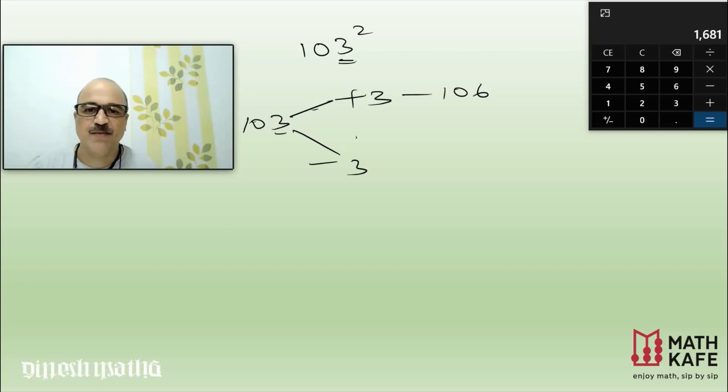And you subtract the 3, that's the next step, so we get 100. And you know that this multiplication is the easiest one we can do because it is ending with two zeros, so it is 10600, and 3 square is 9, so it is 10609.